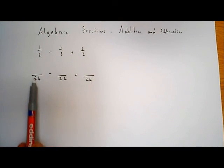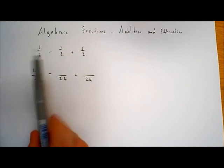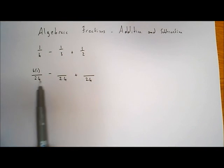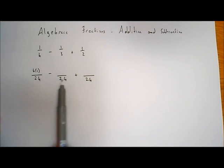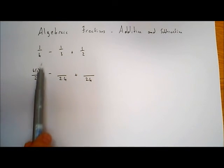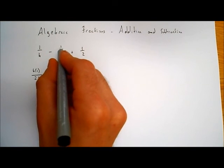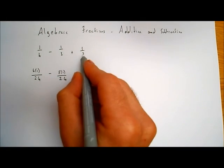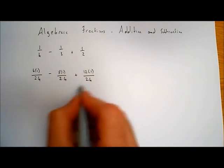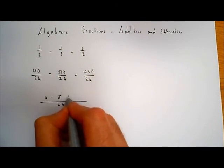Now I look at each fraction individually. How many 4s are in 24? There are 6 of them, so I multiply the top by 6 — that's 6 times 1. Then 3 into 24 is 8, so I multiply that numerator by 8, giving 8 times 1. And 2 into 24 goes 12 times, so I multiply that top line by 12. Because they're all over 24, I can put them all together: 6 times 1 is 6, minus 8 times 1 is 8, plus 12 times 1 is 12.